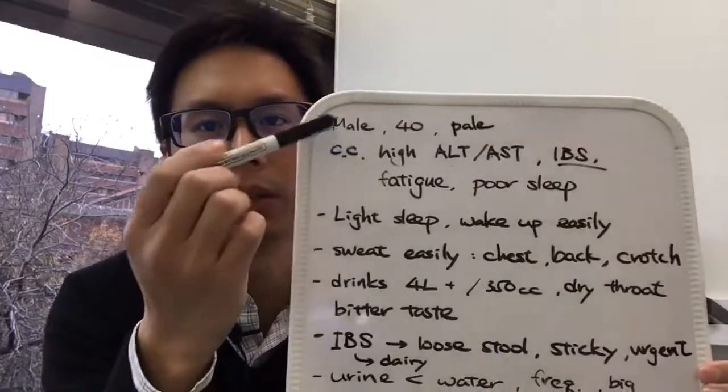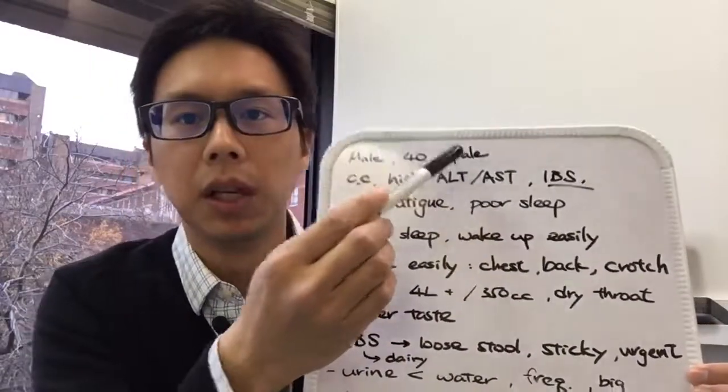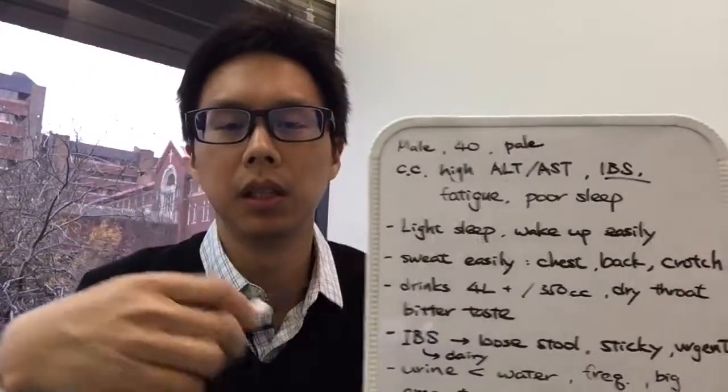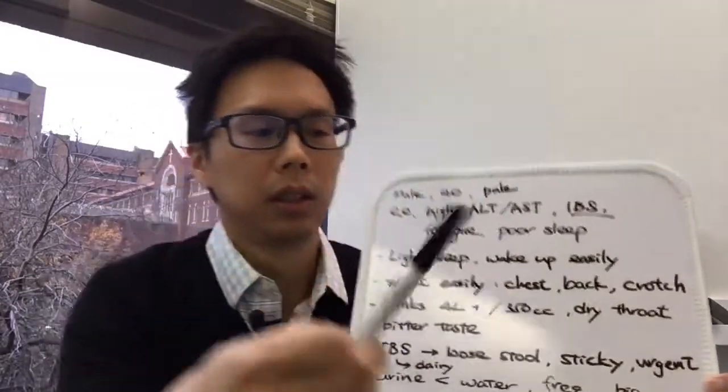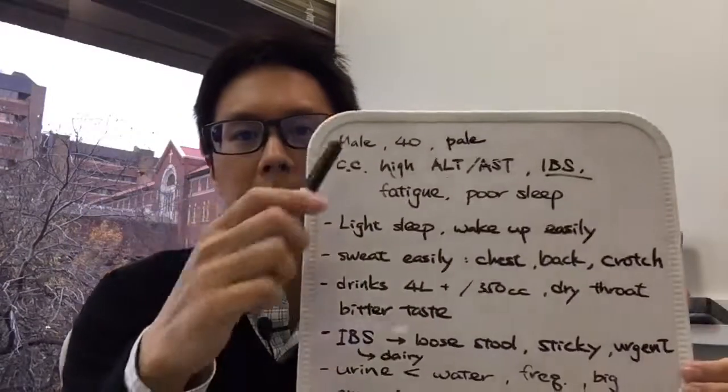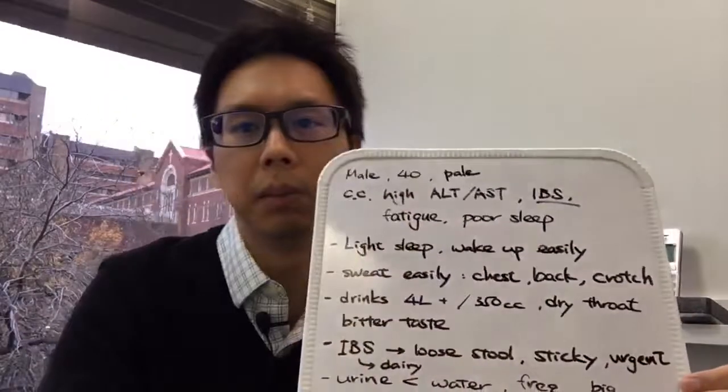This patient is a young male, 40 years old. His skin and his complexion is more pale. When we see someone with the pale type of complexion, it's usually more of a deficient type of person. This person can be lack of energy, lack of stamina. That's how you explain deficiency.